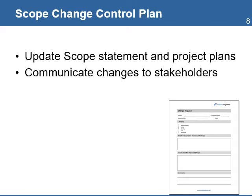Once the change is approved, the next step is to update the project scope statement and project plans. As a project manager, you must update any relevant project plans, including the schedule, the budget, the scope statement, the log frame, and the WBS. Once all plans have been updated, you will need to communicate to the project teams, stakeholders, and management the changes to the project scope.